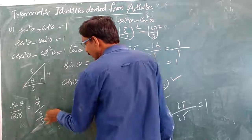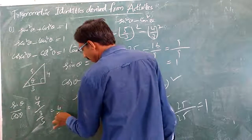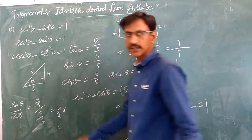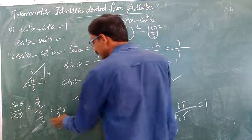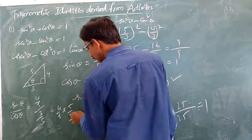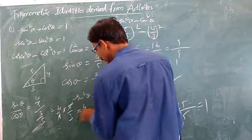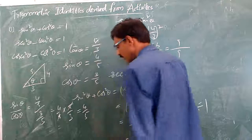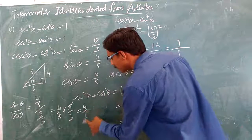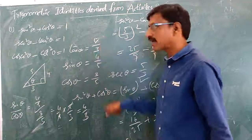This value is 4/5 multiplied by 5/3, which equals 4/3. So sin θ divided by cos θ gives us 4/3.